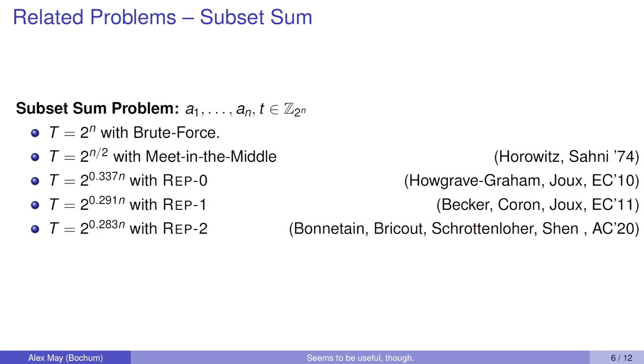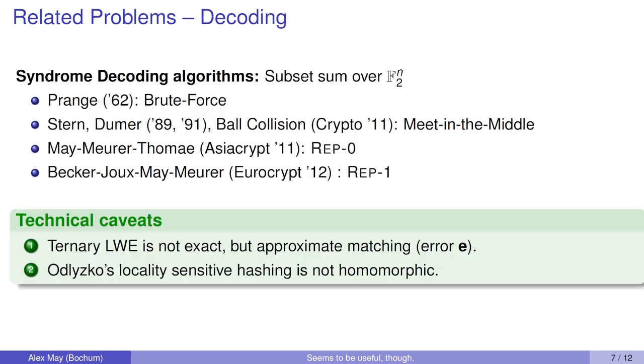It was also used for decoding. You can consider the famous syndrome decoding problem as a subset sum type problem over F2. Then you have Prange's algorithm from the 60s, which is a brute-force algorithm. Then you have the Stern and Dumer algorithm from the 90s and the ball collision algorithm from Crypto '11, which are basically meet-in-the-middle type algorithms. Then you have the MMT algorithm from Asiacrypt '11, which you consider as sort of a rep-0 algorithm, and the BJMM algorithm, which is currently considered the best syndrome decoding algorithm from Eurocrypt '12, which you consider as a rep-1 algorithm.